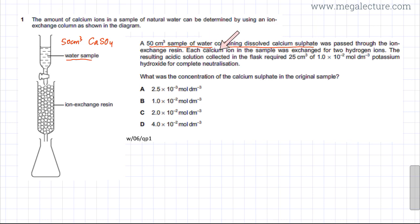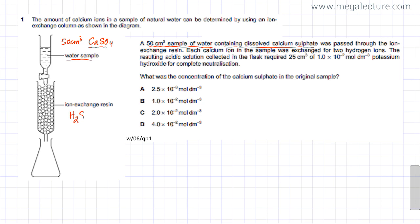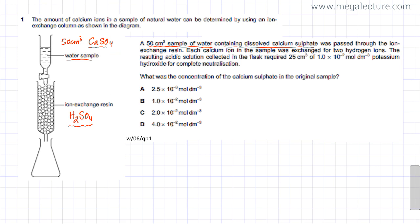The question states that each calcium ion in the sample was exchanged for two hydrogen ions. So in the ion exchange chamber, CaSO₄ has its calcium ion replaced by two hydrogen ions, giving H₂SO₄ as the resulting acidic solution. The mole ratio is 1:1 — one calcium sulphate is converted into one sulfuric acid molecule. The volume of this solution is also 50 cm³.